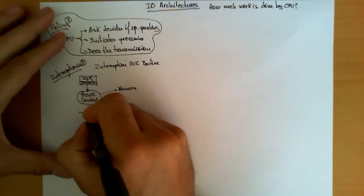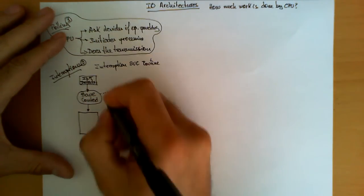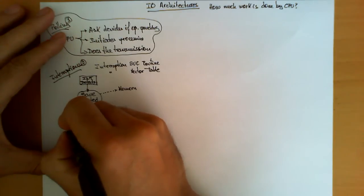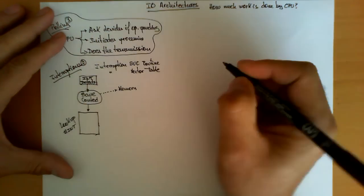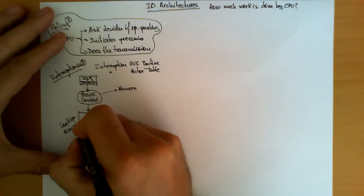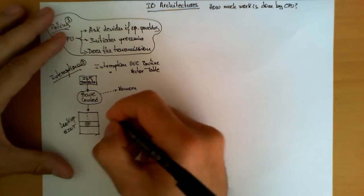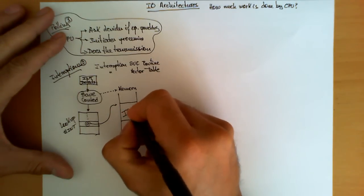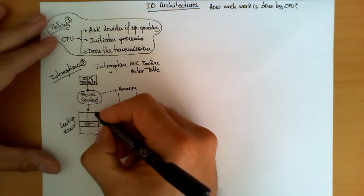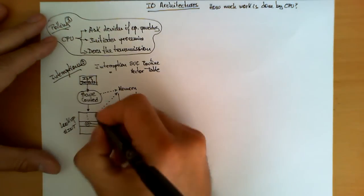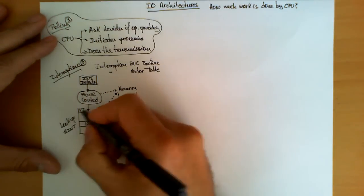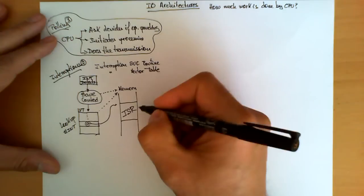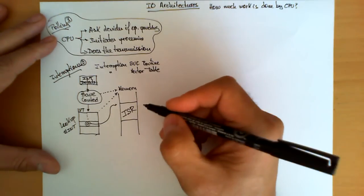The next step is one of the most important ones. A table called the interruption vector table (IVT) is checked, and this table is used to perform a lookup operation using the number of the interruption received by the CPU. This lookup identifies one slot, and each slot contains the address in memory where the interruption service routine (ISR) is stored. The IVT has in each of its slots the address of the ISR that will take care of the operations required by every input-output device hooked to the system.